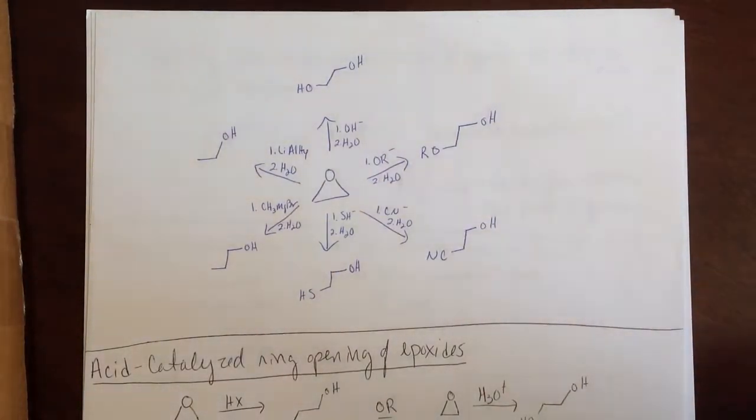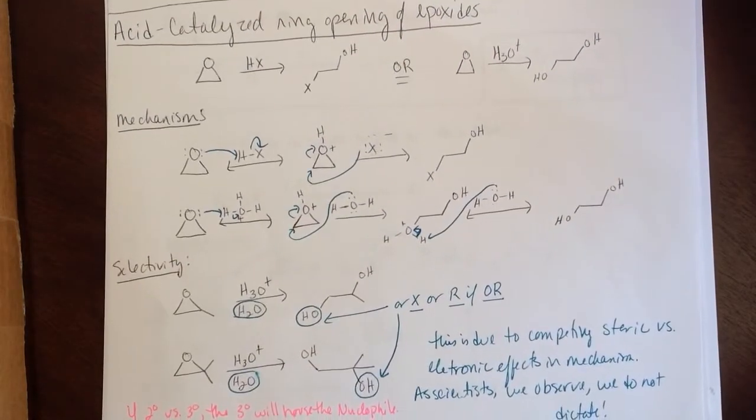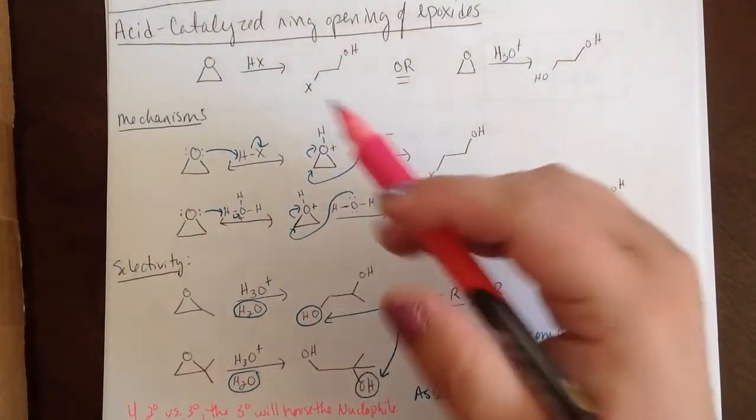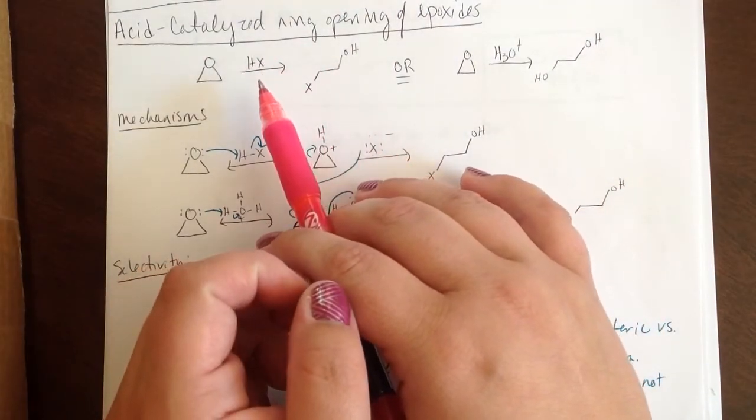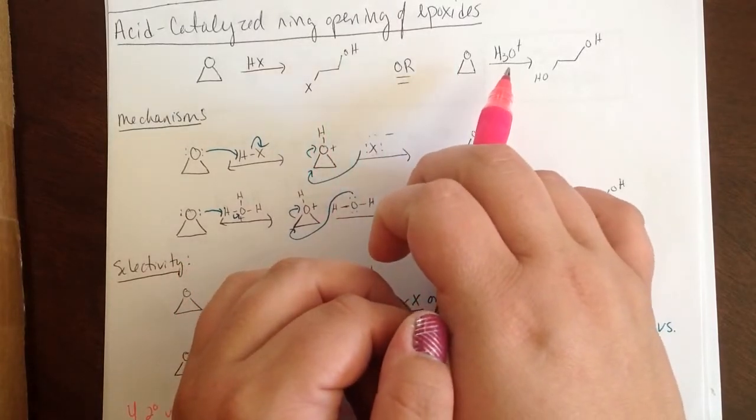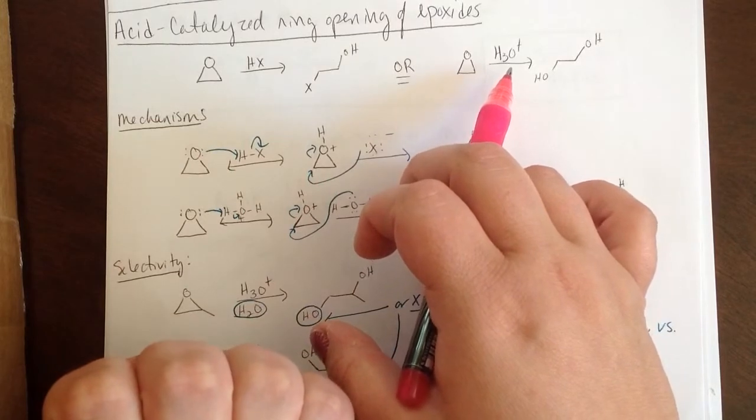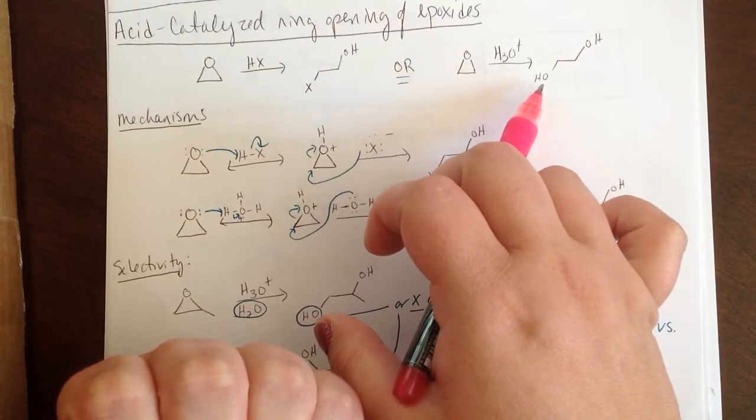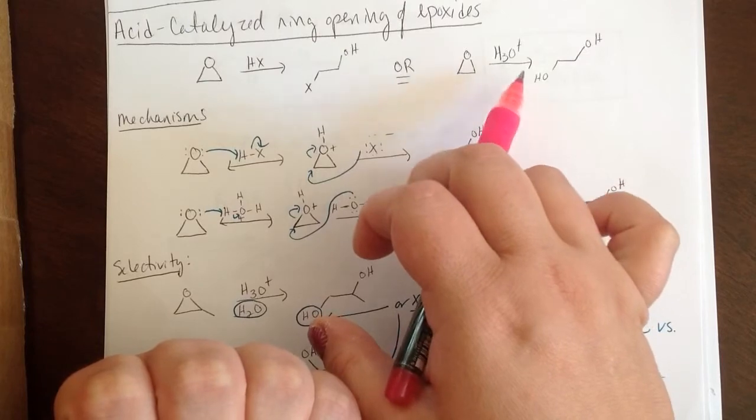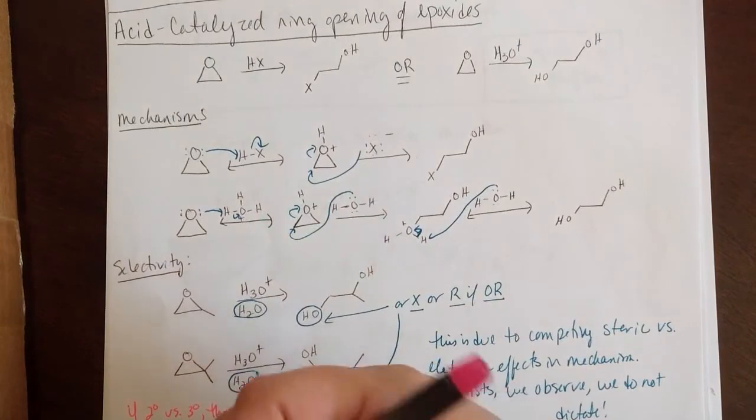So that's how we actually open epoxide rings in the presence of a base. Let's look at what happens when you have an acid because you can actually get that to open with an acid as well. You can get that to open with HX which will give you an X, or with H3O+, or you could use an alcohol with H+ that would give you OR instead of an OH. There's a variety of things that you can actually do to end up with your nucleophile in acidic conditions.